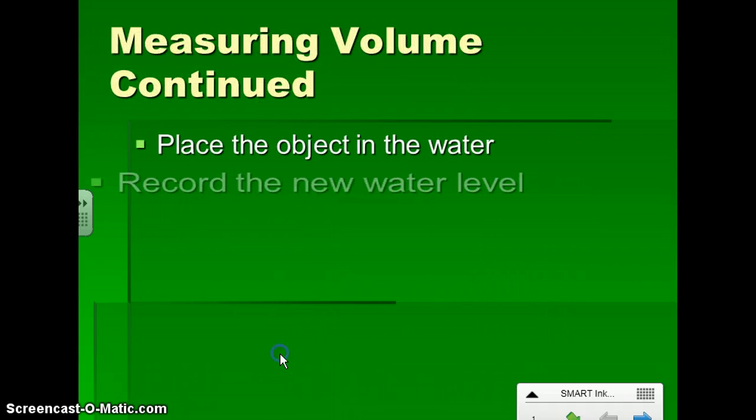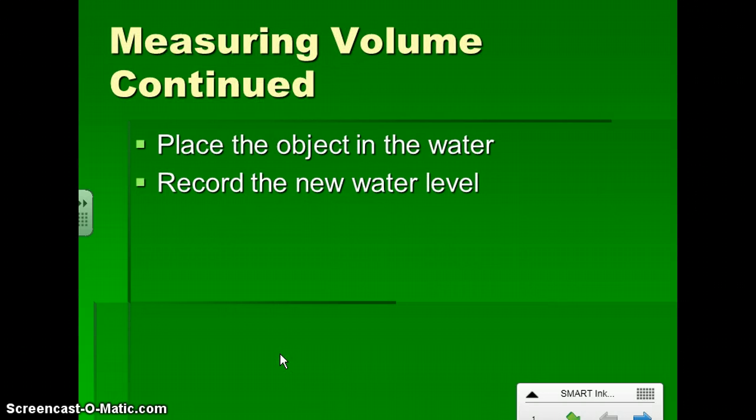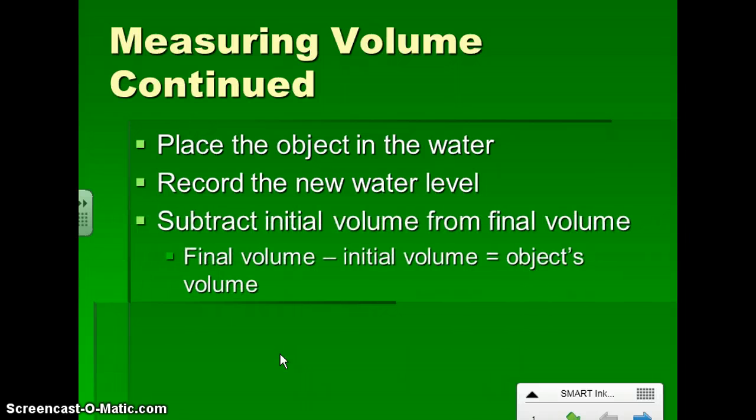From there, we'll actually place the object down into the water. The water level will go up, so we'll record that new water level, and then we'll do a little bit of math. We'll subtract the initial volume from the final volume, which means we take that final volume, the bigger number, subtract our first number, the initial volume, and then we'll know the object's volume.